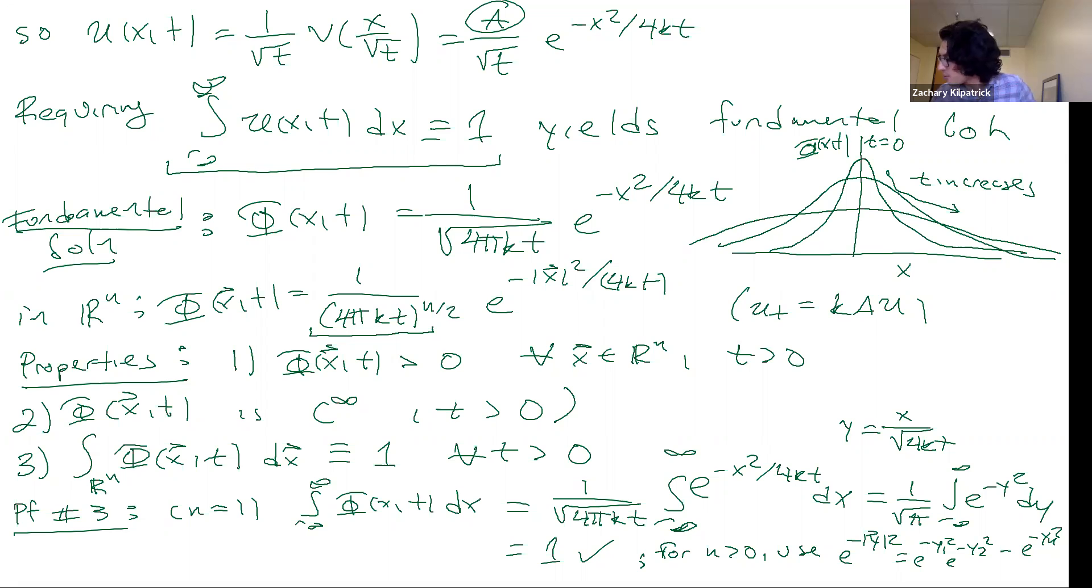So let me, I just have a couple more minutes. Let me just make a few more remarks. So first of all, this thing phi that we've derived, it is a probability density function. It's really just a normal distribution.